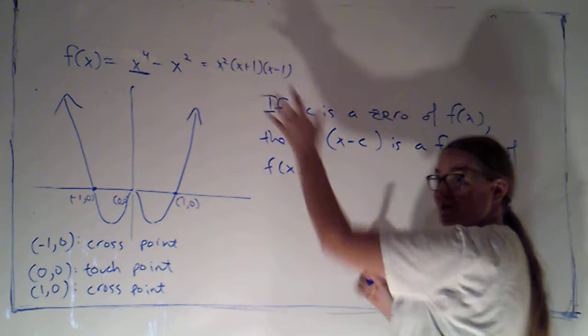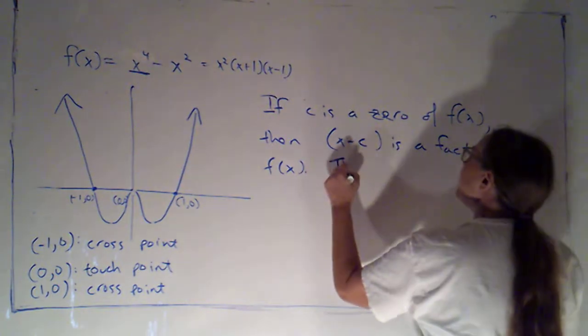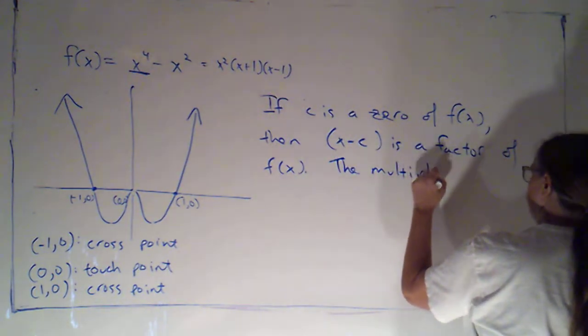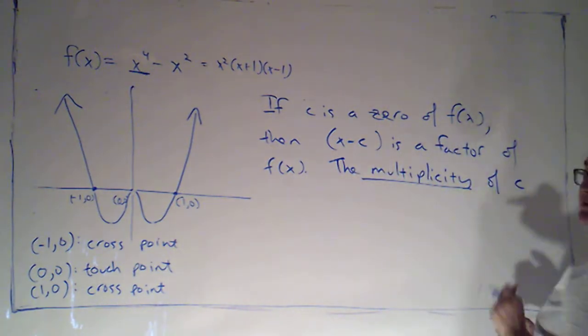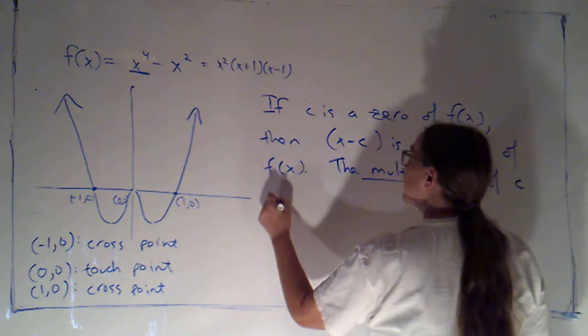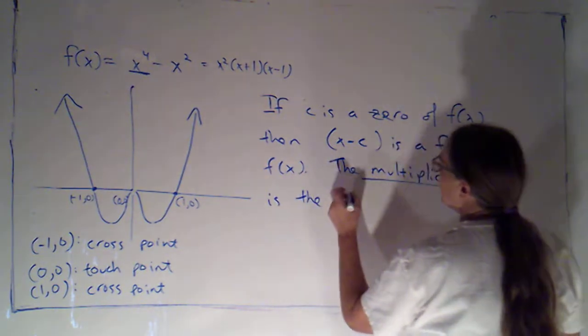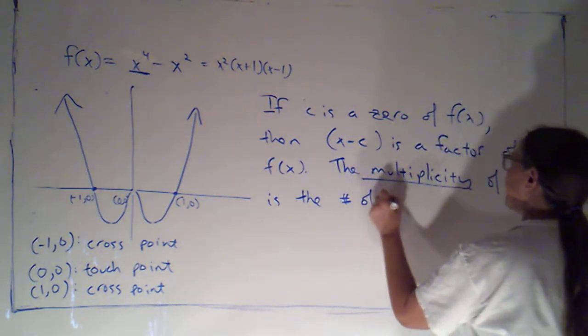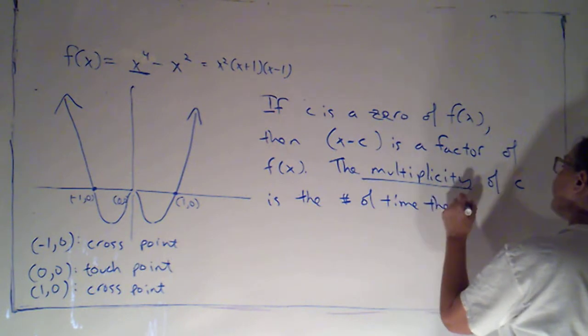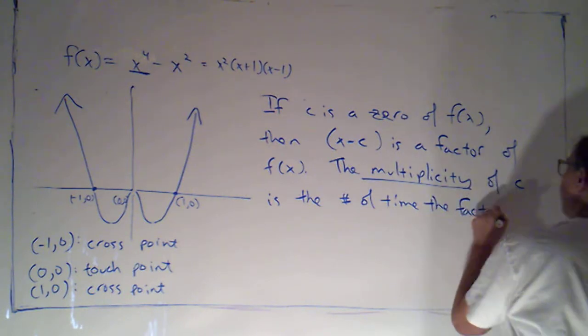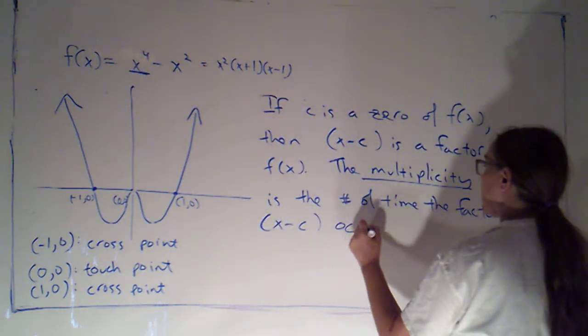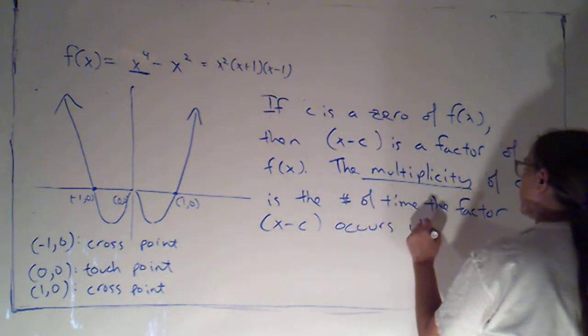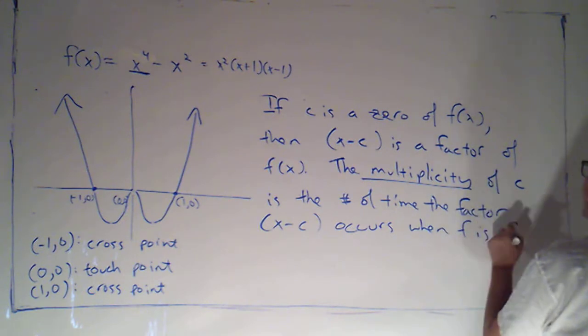The multiplicity of the zero c is the number of times the factor x minus c occurs when f is fully factored.